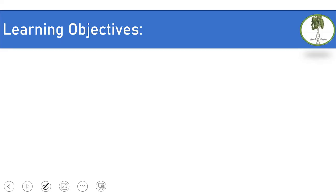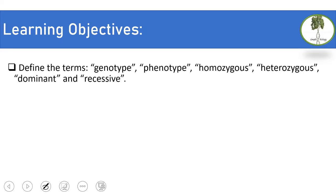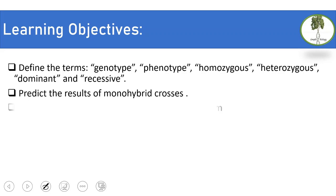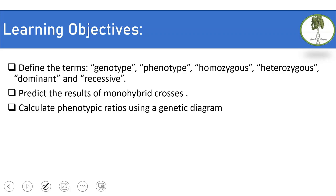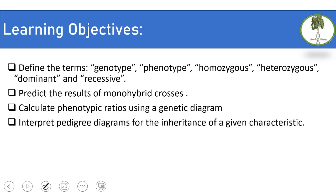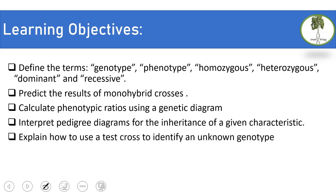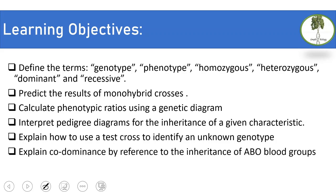In this lesson we will define the terms genotype, phenotype, homozygous, heterozygous, dominant, and recessive. We will predict the results of monohybrid crosses, calculate phenotype ratios using a genetic diagram, interpret pedigree diagrams, explain how to use a test cross to identify an unknown genotype, and explain codominance by reference to the inheritance of ABO blood groups. And let's start.